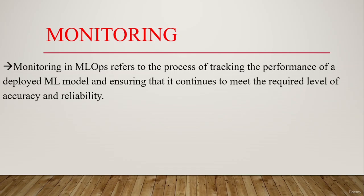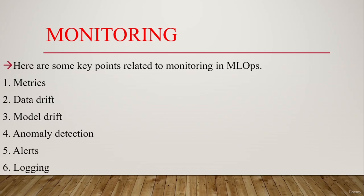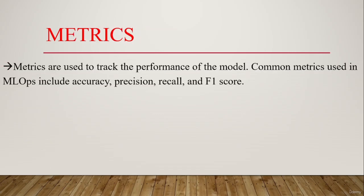In this video we will discuss monitoring. Monitoring in MLOps refers to the process of tracking the performance of a deployed machine learning model and ensuring that it continues to meet the required level of accuracy and reliability. Key points related to monitoring in machine learning operations include: metrics, data drift, model drift, anomaly detection, alerts, and logging. Metrics are used to track the performance of the model. Common metrics used in MLOps include accuracy, precision, recall, and F1 score for classification problems, while other metrics are used for regression problems.